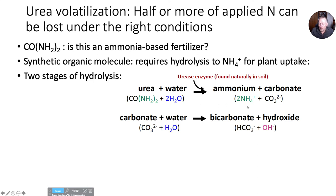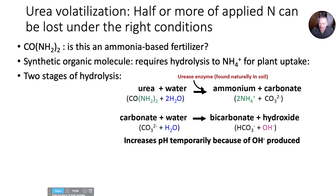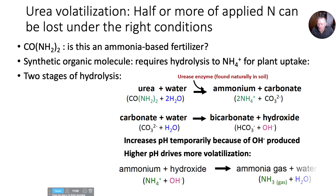First, urea plus water yields ammonium plus carbonate. That carbonate mixes with water and creates hydroxyl ions, consuming hydrogen ions and creating hydroxyl ions — both of which increase the pH in the soil right around that prill. We can get drastic increases of pH right around that prill. It's temporary, but it drives volatilization. Those hydroxyl ions convert that ammonium to ammonia gas, which is lost to the atmosphere. That hydrolysis of urea temporarily increasing pH in that microsite is what makes urea high risk for volatilization more so than other products.